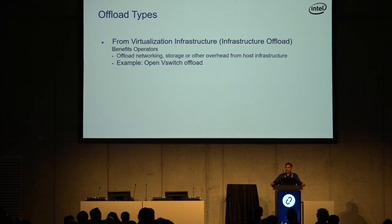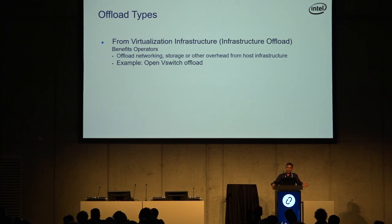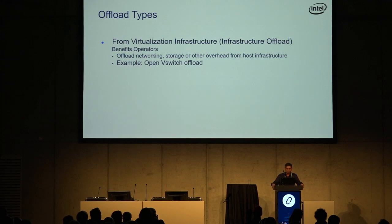The packet flow between the VMs needs to be switched, and you typically have something like Open vSwitch running on the host consuming CPU. The act of switching packets or processing storage for your VMs is consuming CPUs. From an operator's point of view, that's not a good thing — that CPU could have been given to a tenant and charged for. So you want to offload that to save your CPU for what really matters.